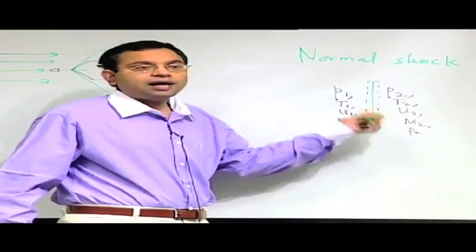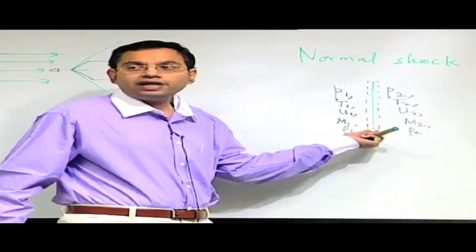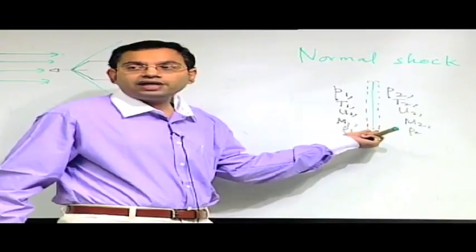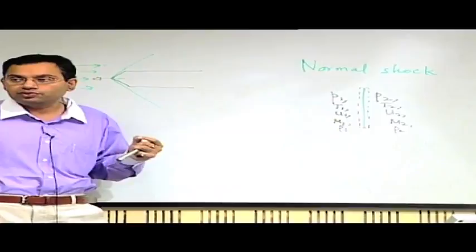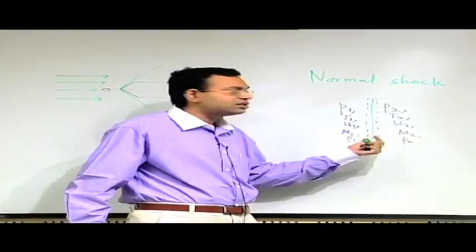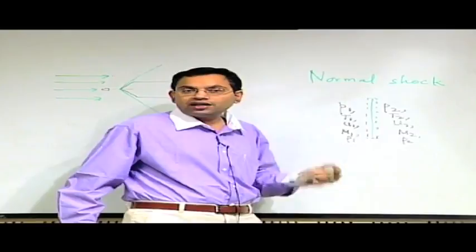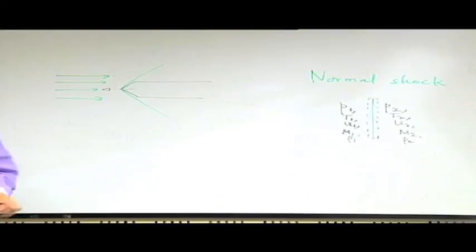When such jump discontinuities occur, the rapid change in flow properties takes place over a very thin region. We may consider the process adiabatic because there is insufficient time for heat transfer. However, because the process is very fast it is no longer reversible — it is an irreversible and adiabatic process. Therefore isentropic flow conditions cannot be applied to relate M1, M2, U1, U2, T1, T2, P1, P2, which is why a separate analysis is needed for the shock.